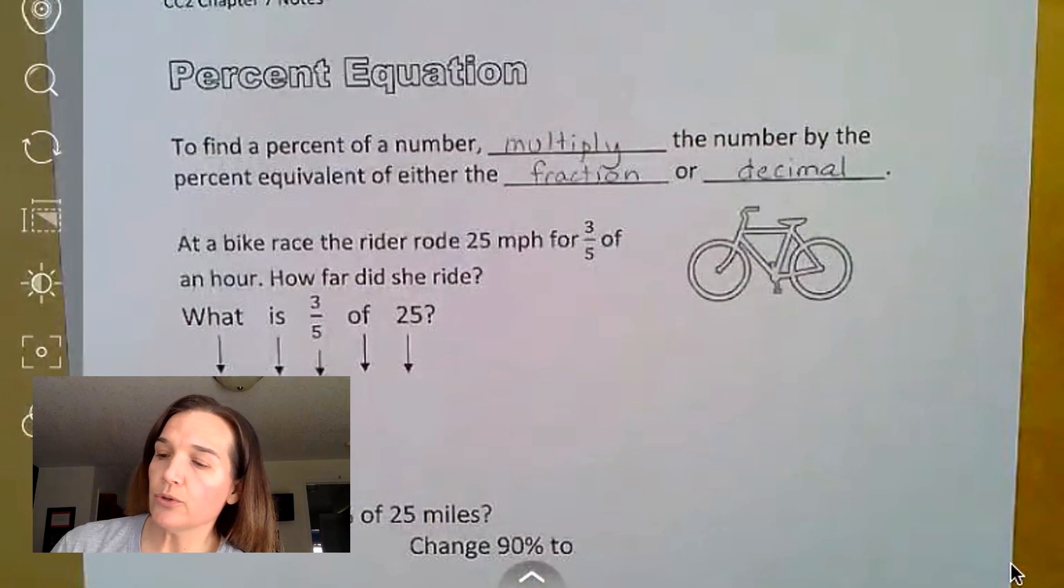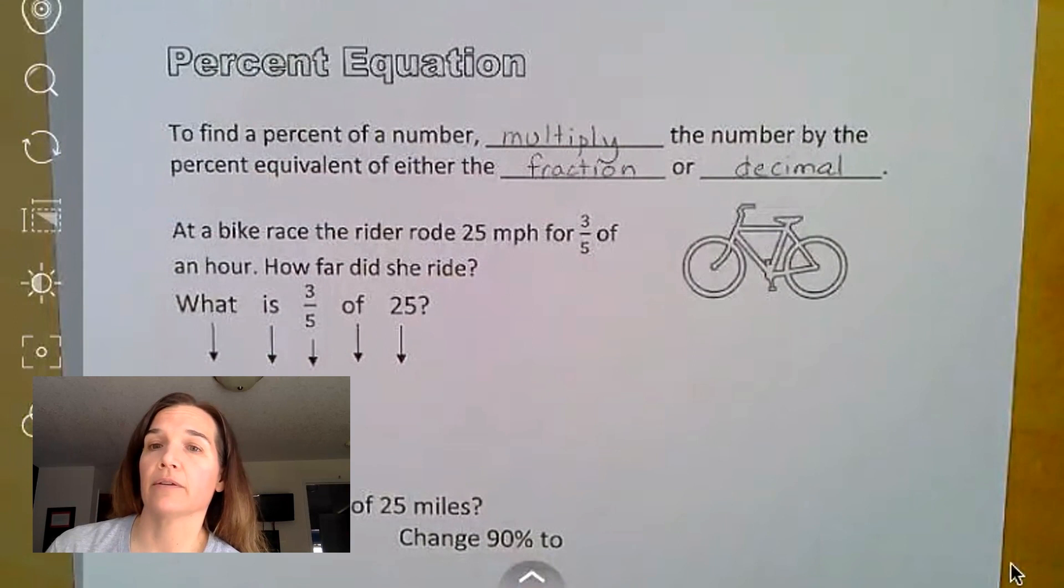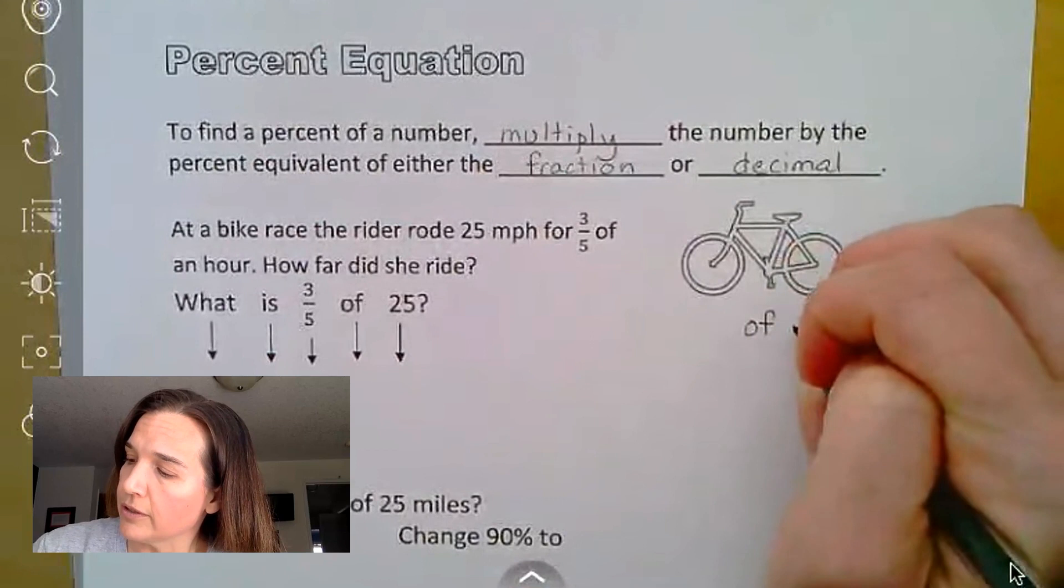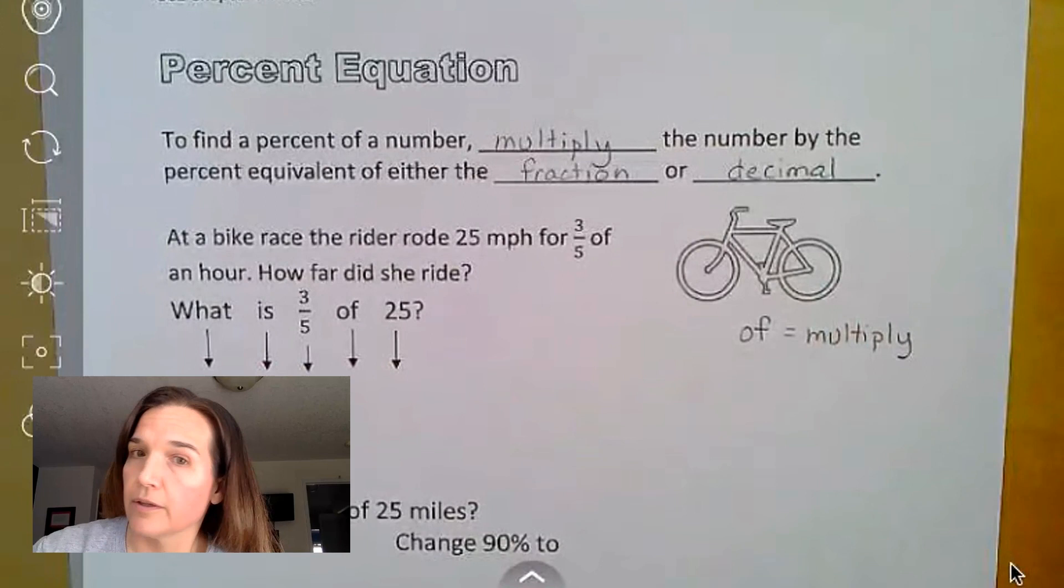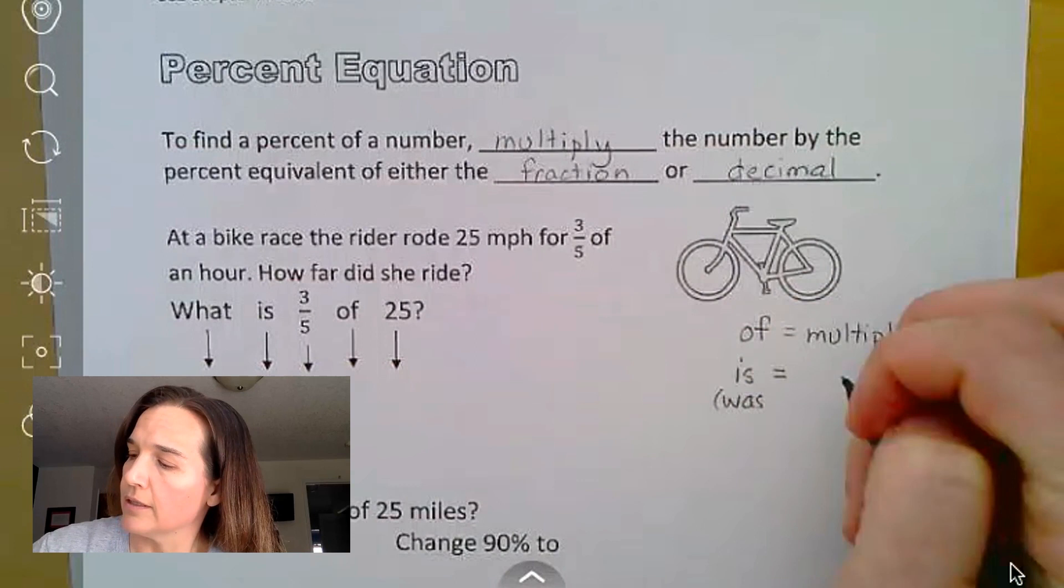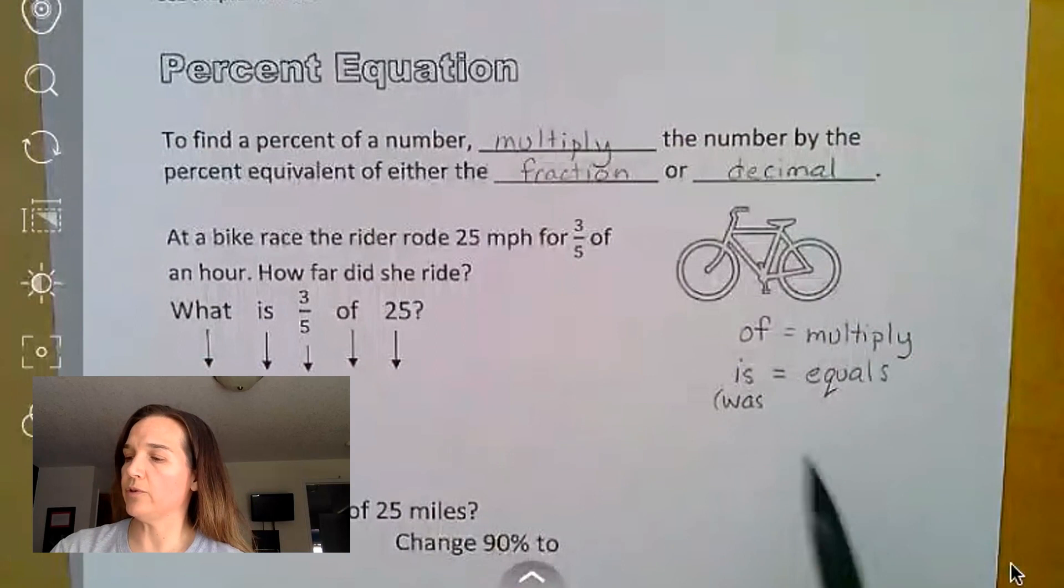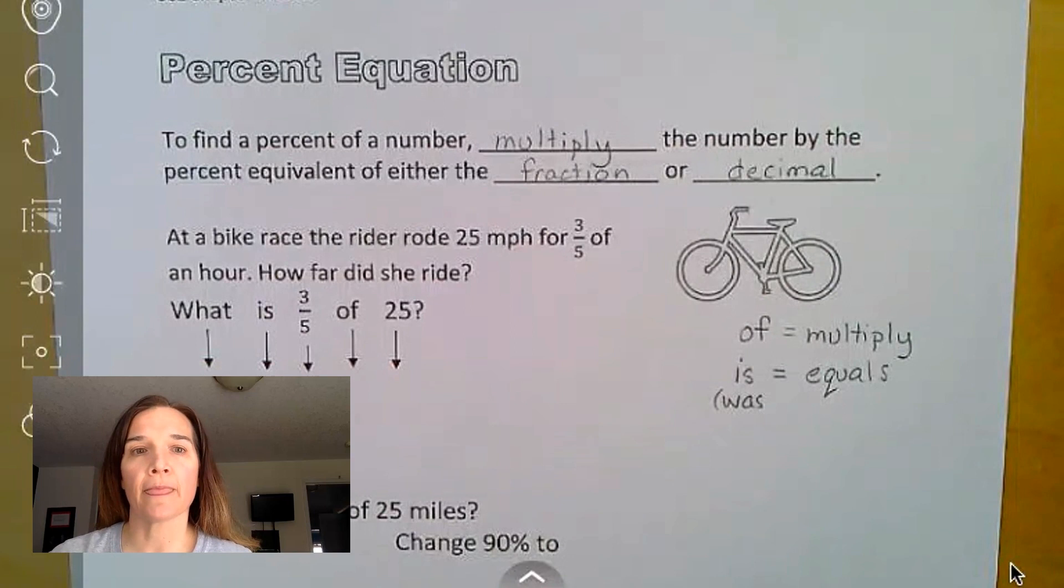And there are two very important words for this that work for almost every math problem, word problem you'll ever have. The word of means to multiply, and the word is, or sometimes they say was, means equals. And so if you use that as you read through the sentences, you can translate it into an equation and solve from there.